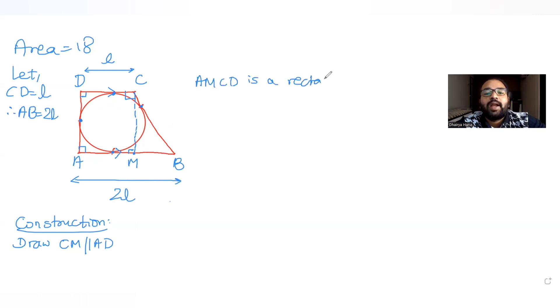And when it is a rectangle, I know opposite sides of a rectangle are equal to each other. So when opposite sides are equal, this CD is L, so AM also becomes L. And when I get AM, I can find BM as well. So BM becomes AB minus AM, that is 2L minus L, that is L. So I get this is also L.